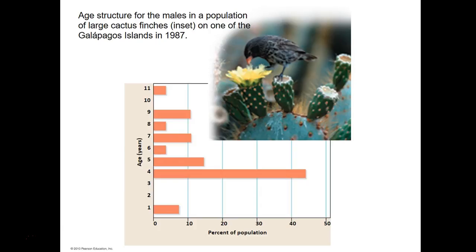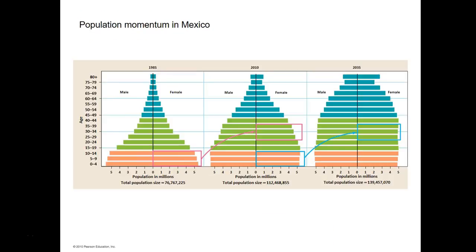Here's an example using cactus finches. When you look at their age structure, you see that most of the population is age four, with a gap where there are no two-year-olds and no three-year-olds. It turns out that two and three years ago there was a drought, and all the eggs that were laid could not be fed appropriately, so they died. Whereas four years ago there was good rainfall, and most of the fledglings survived.